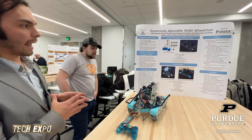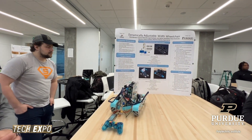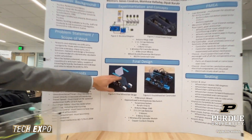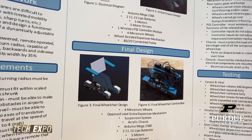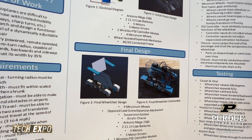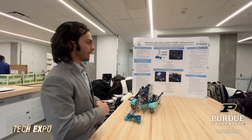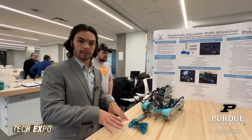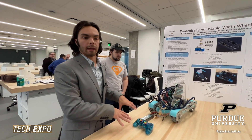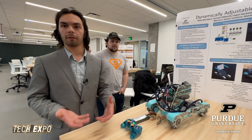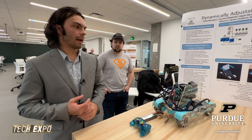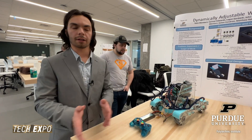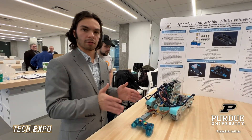The final CAD rendering shows the full design, including where the back of the chair and arm braces would be added aesthetically. Once assembled, we tested the device on vinyl surfaces and low-pile carpet to simulate the floor surfaces typically found in an airport. We verified whether it could transition between surfaces, turn on those surfaces, travel omnidirectionally, and expand and contract.